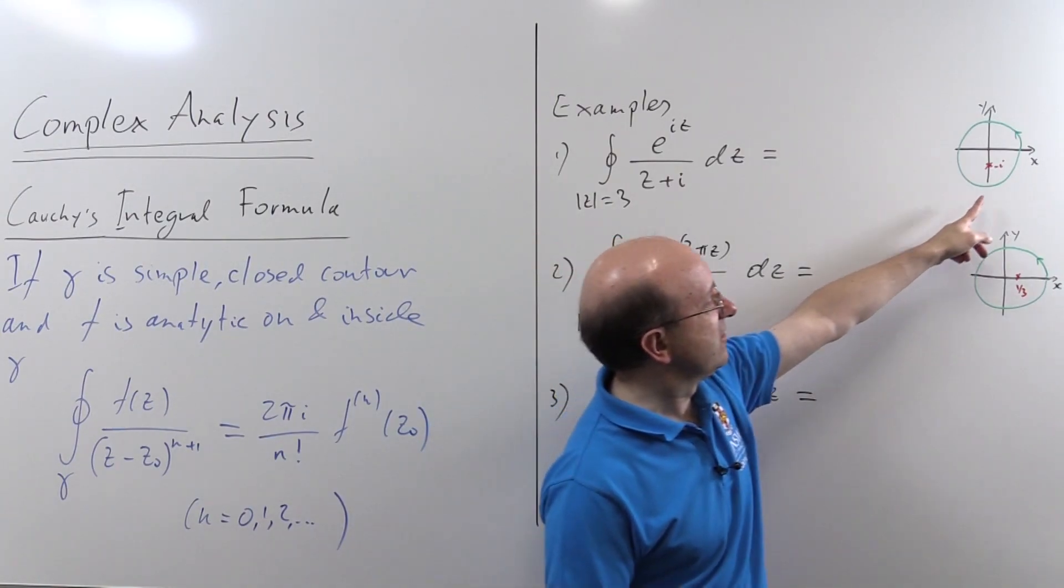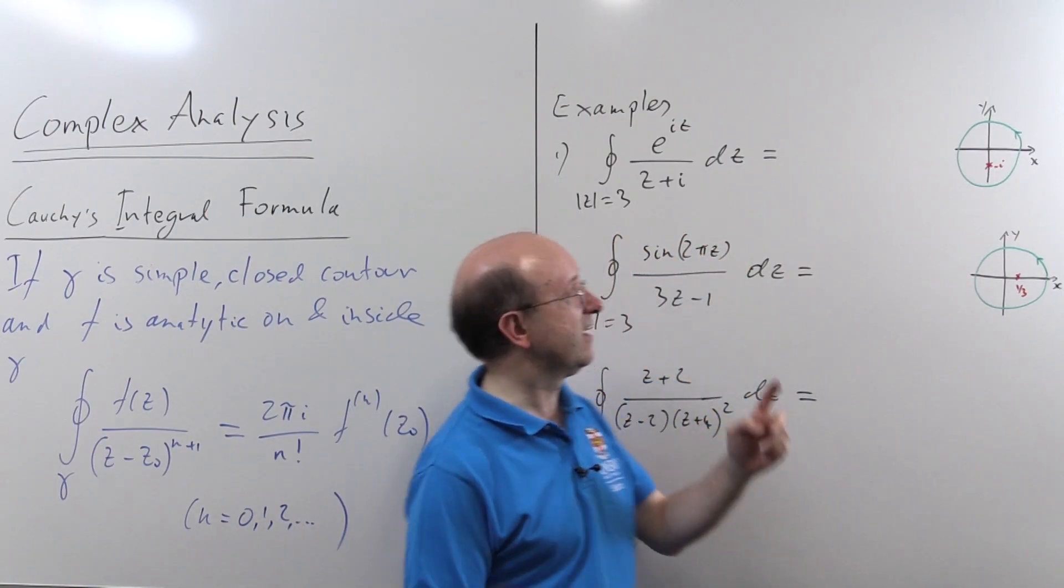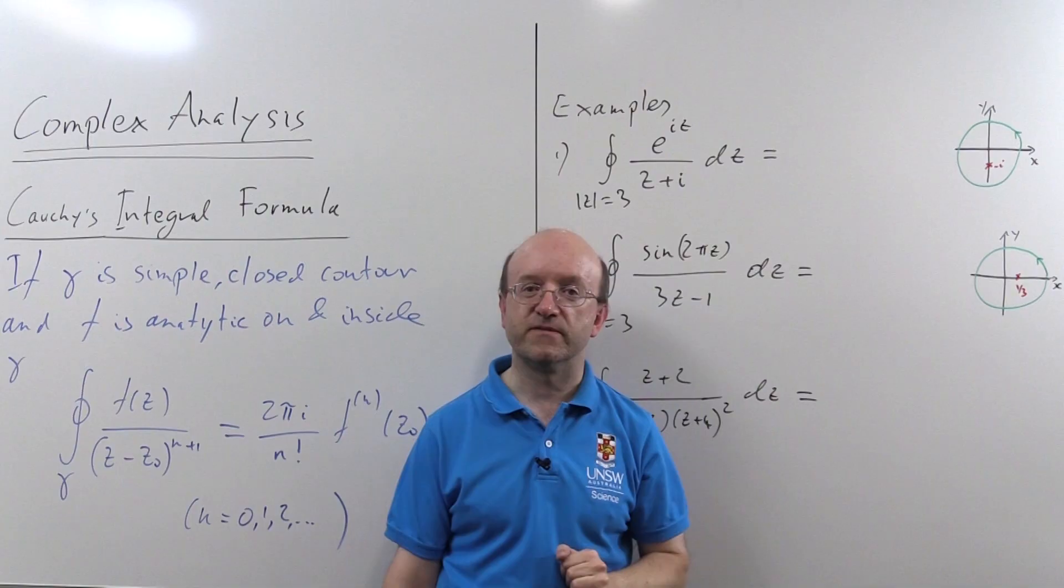In this case, contour, just a simple circle, and the singularity clearly is at minus i. That's where the denominator vanishes.